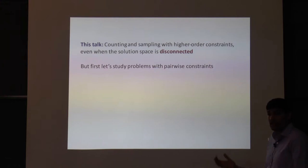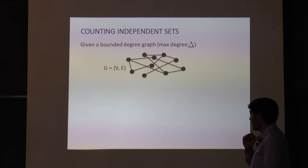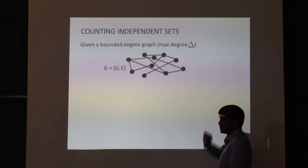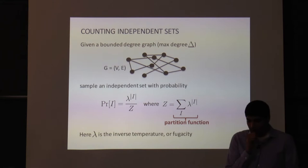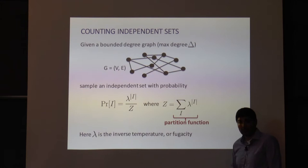Before I get to higher order counting and sampling problems, I first want to start with a simpler problem: counting independent sets, often called counting independent sets in the hardcore model. The input is a graph G and some bounded degree delta. The goal is to sample an independent set with probability proportional to lambda to the size of the independent set.